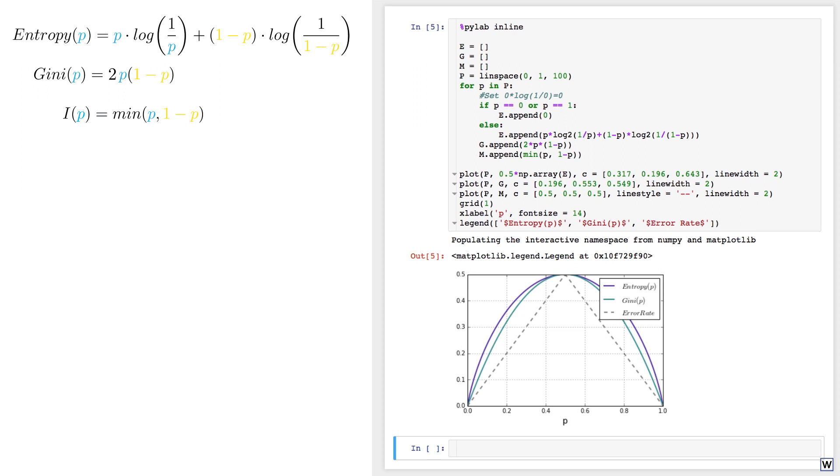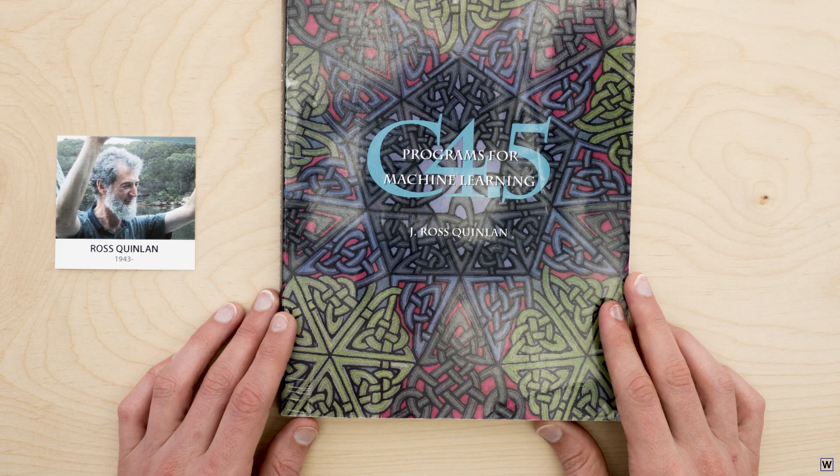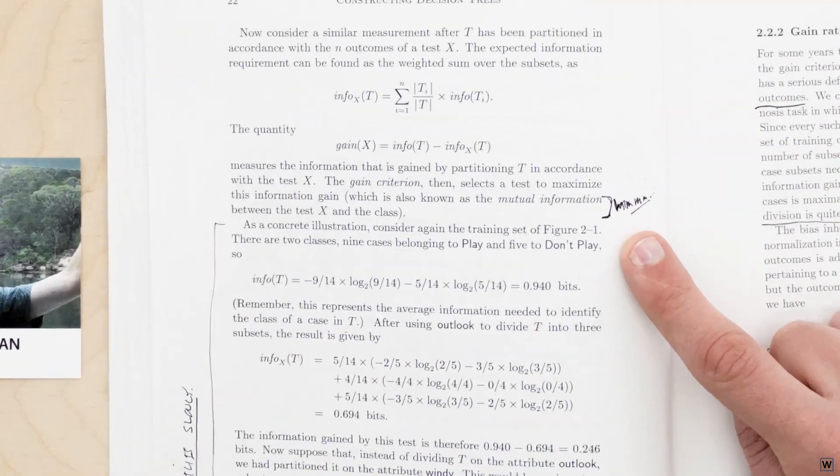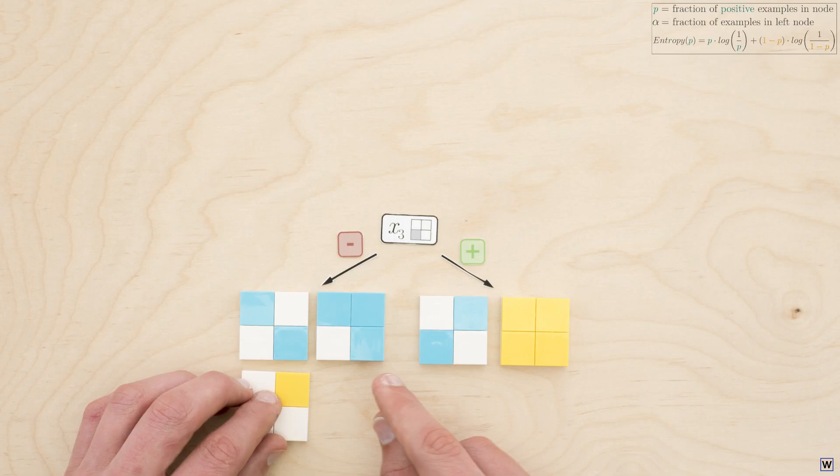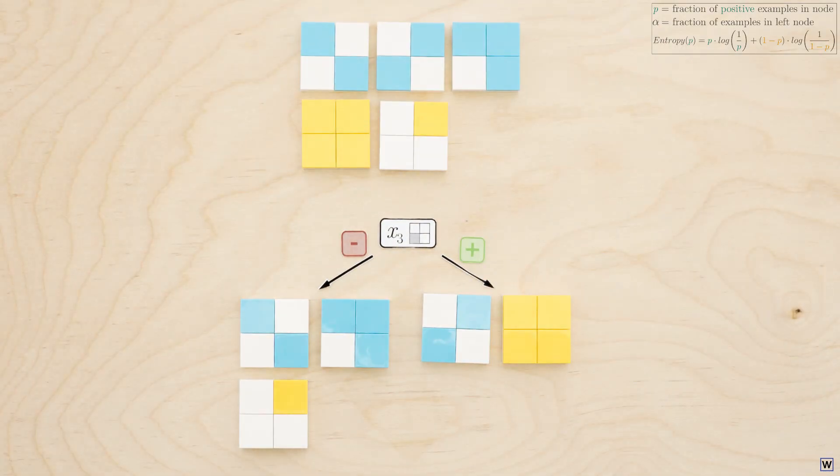So our dive into information theory has led us to an incredibly similar result to our much simpler Gini impurity. Which, depending on your interpretation, either means we've completely wasted our time, or that we're really onto something. Now, remember that Ross Quinlan's original idea here was to measure the information gained by each split, and choose the split that made the largest gain.